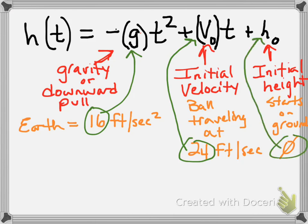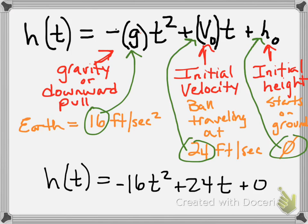So with all of my different variables and coefficients now plugged in, let's take a look at what this will look like. H of T equals negative 16 T squared plus 24 T plus zero. So I plugged in the 16 for G, and the negative goes in front. I plugged in 24 for V of O, and zero in for H of O.